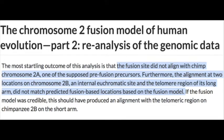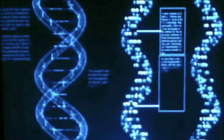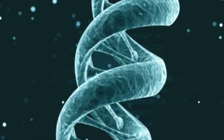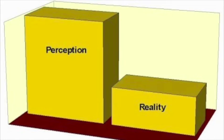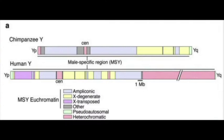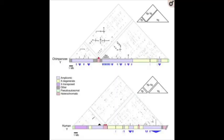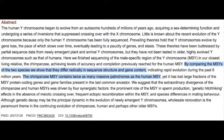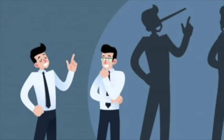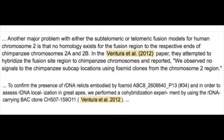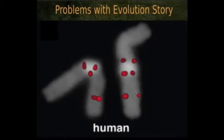Seventeenth, there are two main classes of MSY sequences shared between two species: ampliconic and X-degenerate. Humans always have X-transposed sequences but chimps do not. Eighteenth, if human chromosome 2 were indeed the result of an end-to-end fusion from chimp chromosomes 2a and 2b, we would expect to find the fusion sites surrounded by highly similar DNA sequences — we do not. Nineteenth, the precise match in gene order between human chromosome 2 and the corresponding chimpanzee chromosomes is actually unknown. When the chimpanzee DNA sequence was analyzed, researchers did not independently determine the gene order along all chimpanzee chromosomes, leading to a flawed overestimation of overall gene similarity. The Y chromosome possesses a gene order dramatically different from humans.